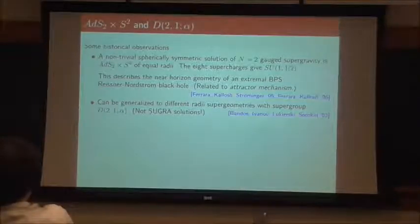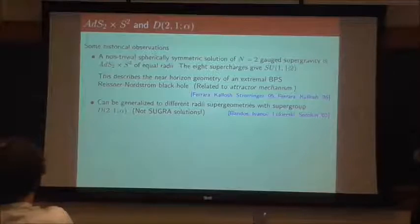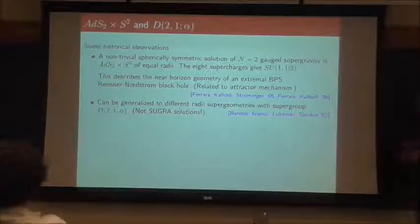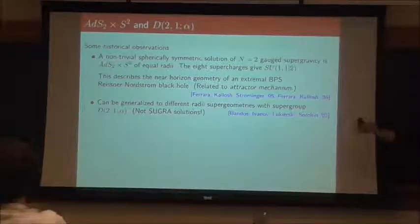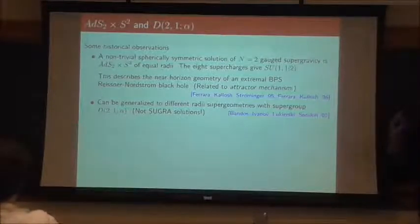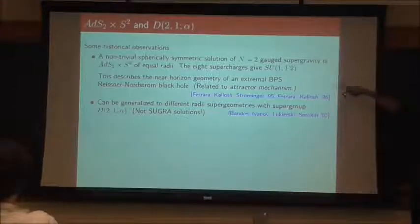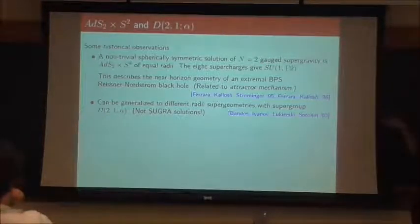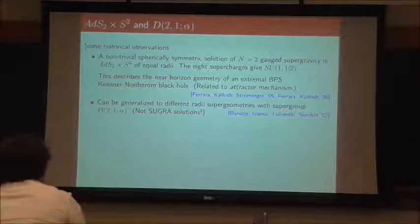Let me give you a quick run-through of D(2,1;α). There is a non-trivial, strictly supersymmetric solution of N=2 gauged supergravity, which is AdS₂×S² of equal radii — a special case of D(2,1;α). The eight supercharges there give the supergroup SU(1,1|2). This actually describes the near-horizon geometry of an extremal Reissner-Nordström black hole. D(2,1;α) generalizes this to different radii — the α in D(2,1;α) is the ratio of the radii, so it's a one-parameter supergroup.